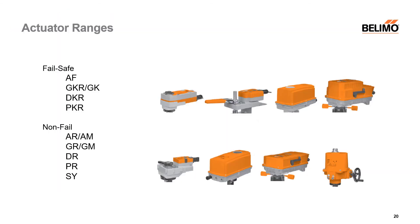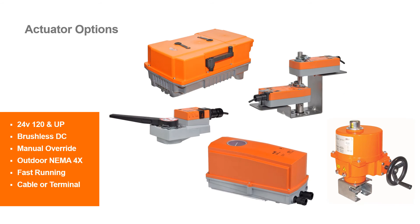Moving into the actuation portion — every butterfly valve requires an actuator unless you're using a handle. We have a full suite of actuators, whether fail-safe with electronic capacitor or non-fail-safe where the actuator stops in place on power loss. We have just about every flavor available in NEMA 2 and NEMA 4. All actuator choices come in 24 and 120 volts; every one of them features a brushless DC motor, manual override, fast and slow running options, and cable or no-cable configurations.